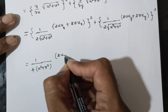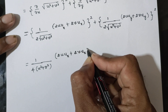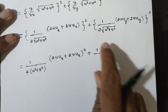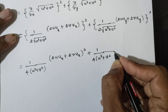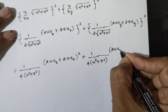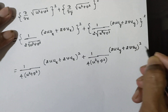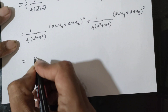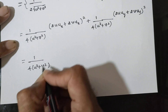We have 2u ux plus 2v vx whole square, and 2u uy plus 2v vy whole square. This is common: 1 by 4 times u square plus v square.